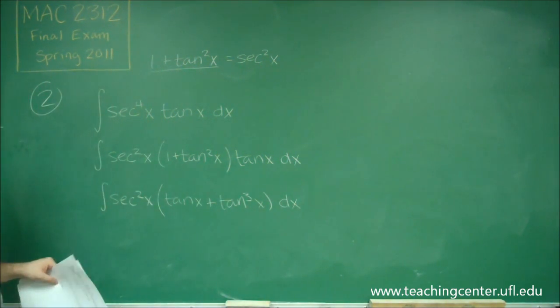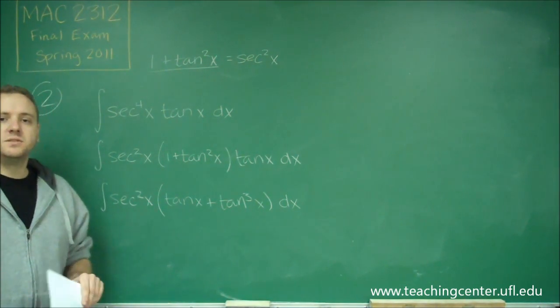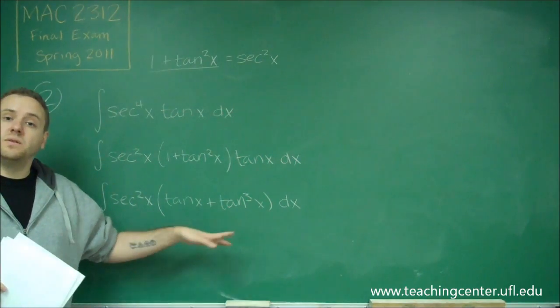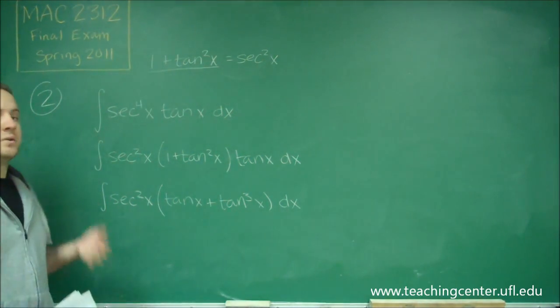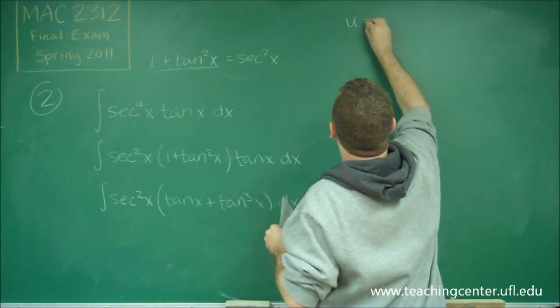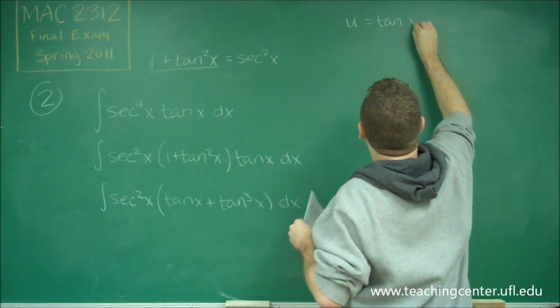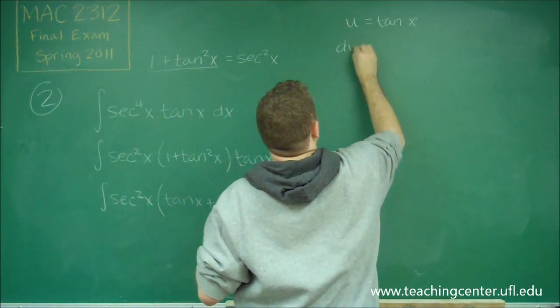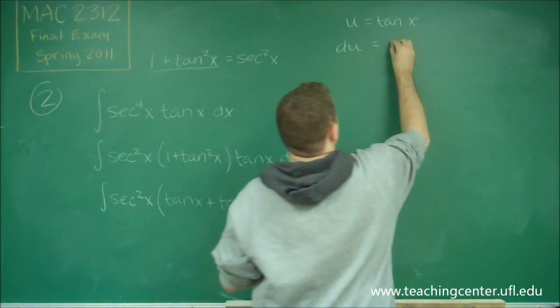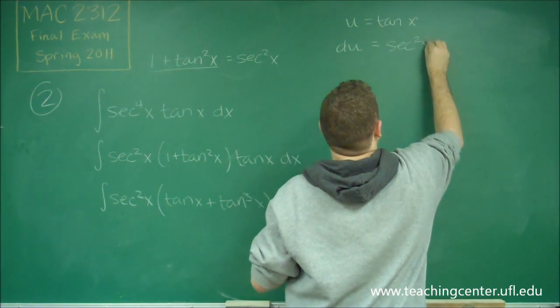So now this is set up for us perfectly to use u as tangent, because your du then would be the derivative of tangent, which is secant squared, which is going to cancel out. So evaluating this integral means we need to say u equals tan x. That tells us that du then is the derivative, so we have secant squared x dx.